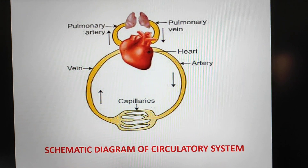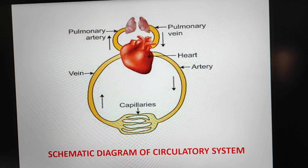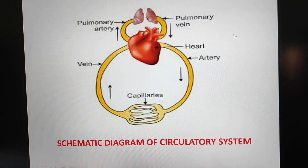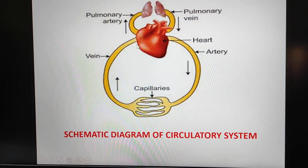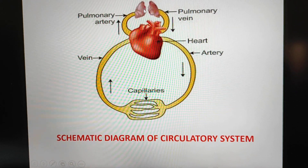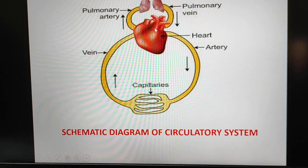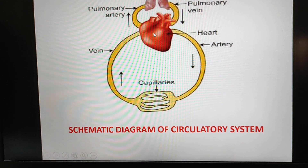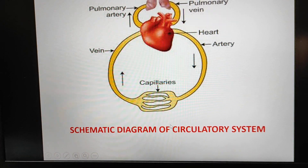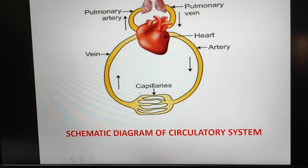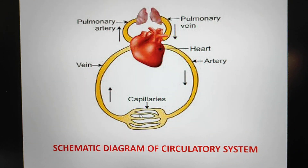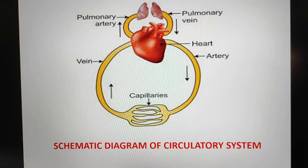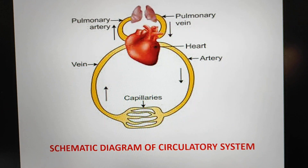This is the schematic diagram of the circulatory system, as you can see in front of you. These are the lungs. The pulmonary vein brings oxygenated blood from the lungs to the heart — that is, to the left auricle. From the left auricle, the blood pushes to the left ventricle, and from the left ventricle the blood moves through the aorta into all parts of the body. In the capillaries, which are the thinnest blood vessels, all exchange of gases and transport of food takes place.